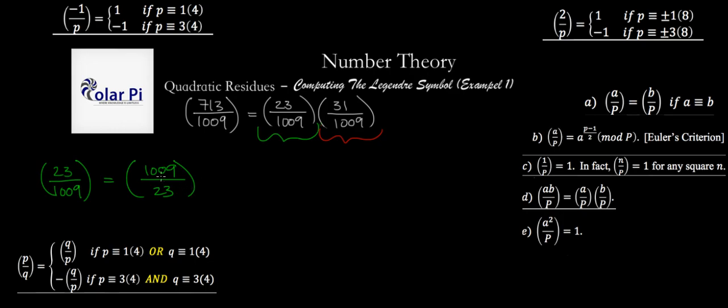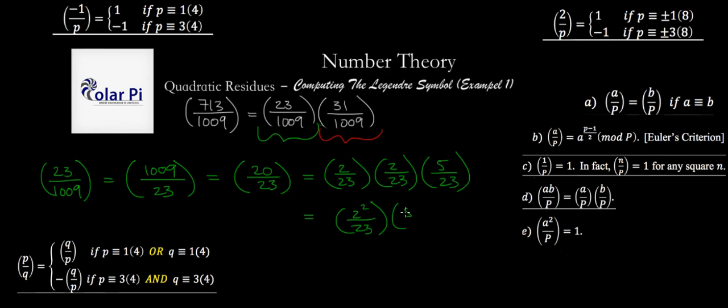And then next, we reduce 1009 mod 23 and write that this is the same as 20 over 23. And next, we can write that this is the same as 2 over 23 times 2 over 23 times 5 over 23. I just intentionally wanted to show you how a repeat application of this would look. But otherwise, I really wanted to write 2 squared over 23 times 5 over 23. And the reason why I'd much prefer this to this is because with this guy, I could just look here and see that this is equal to 1. So then we have what we have is the same as 5 over 23.